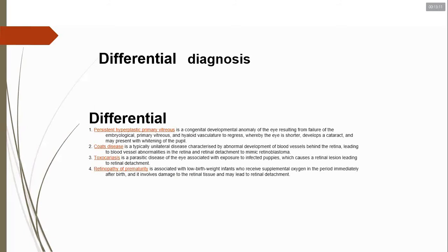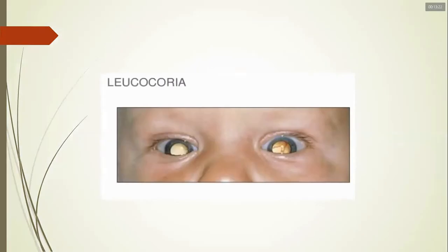The differential diagnoses for leukocoria include: persistent hyperplastic primary vitreous, Coats disease, ocular toxocariasis, and retinopathy of prematurity. The eye can have a cat's eye appearance.